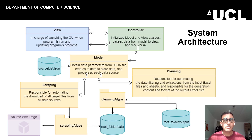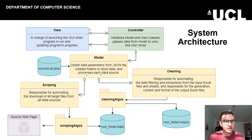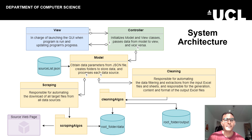I'll now take you through a high-level UML diagram of our system. Our system comprises the Model-View-Controller architecture where the View displays the GUI, the Model processes the data on the back end, and the Controller is the bridge between the View and the Model. The Model has instances of two key classes — scraping and cleaning — which use the scraping algorithms and cleaning algorithms packages to process the data.